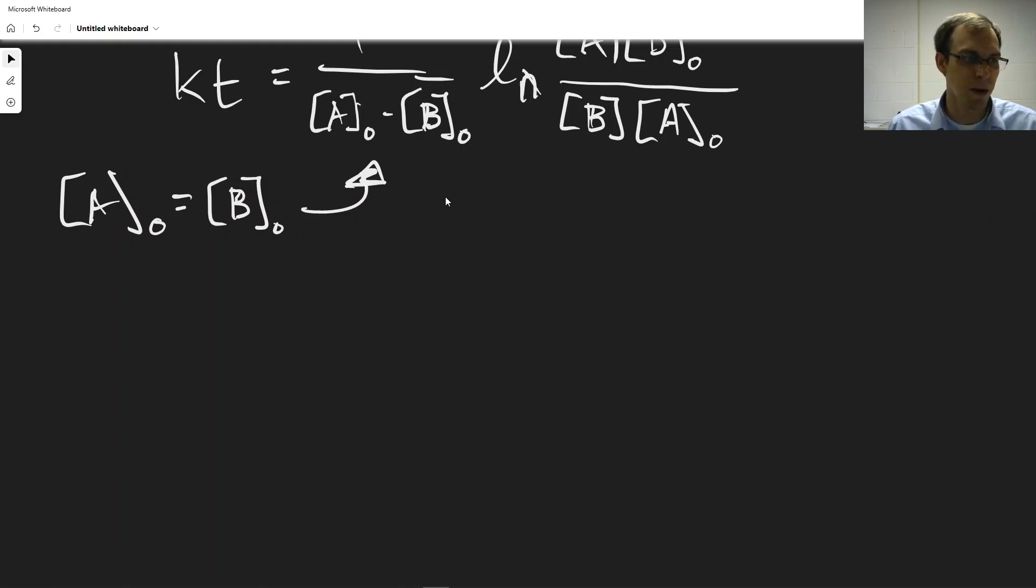The end result is that essentially you can treat each of these as being second order sort of by themselves. So under this specific condition where these are equal to each other, you can show that you have a dependence for the concentration of A that looks just like a second order reaction as if A was the only thing there. So you get 1 over [A] is equal to 1 over [A]₀ plus kt.